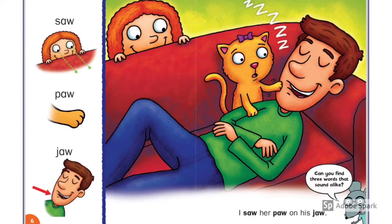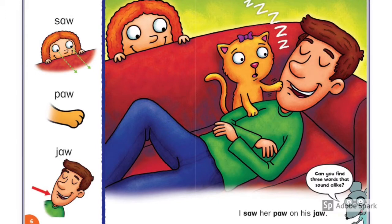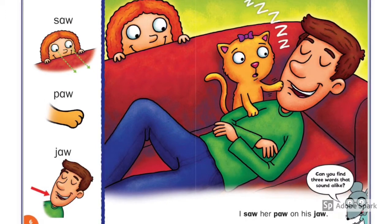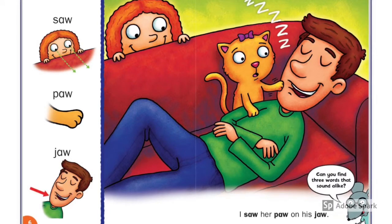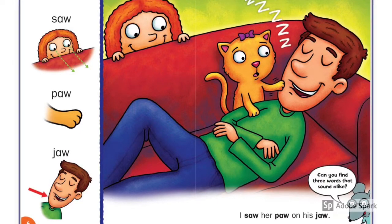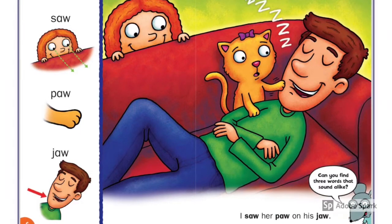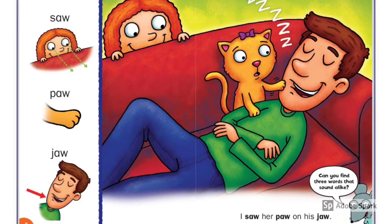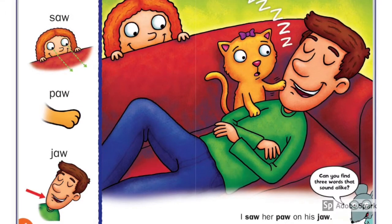Saw, paw, jaw. I saw her paw on his jaw. Look at the man sleeping. Where is he sleeping? Whose paw is it? Who saw the dad — his daughter or his son?